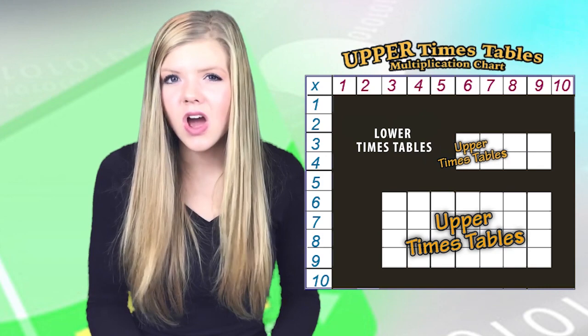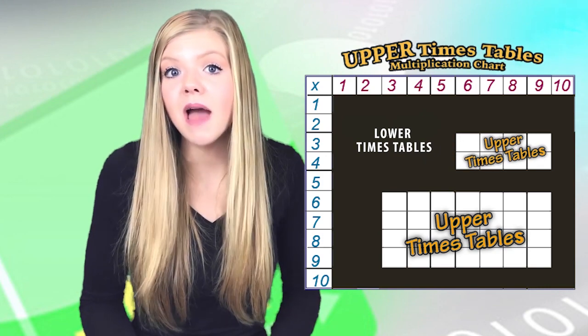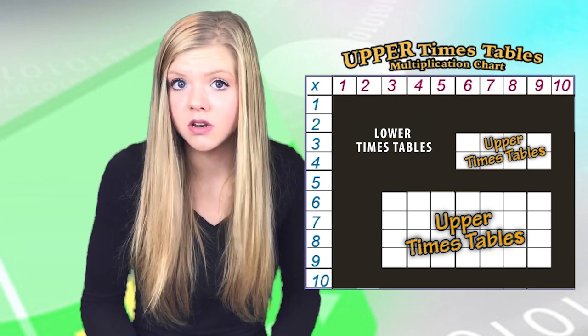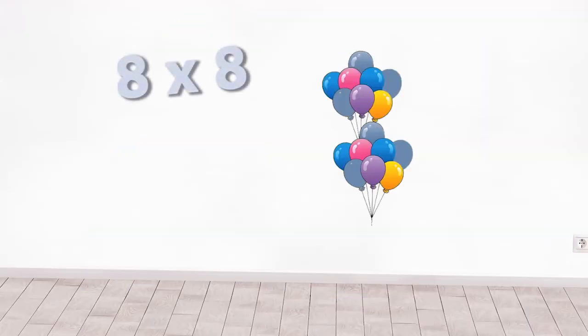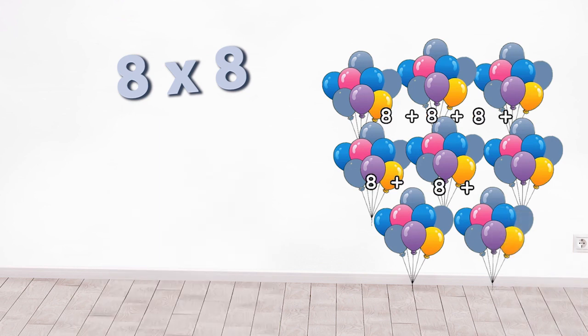Because they cannot easily be computed by reverting back to addition. Try adding eight groups of eight in your head — nope, I don't think so. What this means for kids when they get to these times tables is: memorize, memorize, and memorize again, because you probably forgot from the time before.